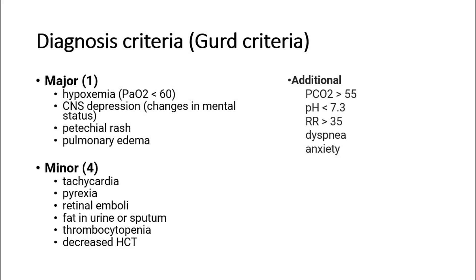Minor criteria are tachycardia, pyrexia, retinal emboli, fat in urine or sputum, thrombocytopenia, and decreased hematocrit.